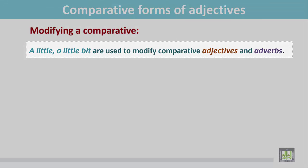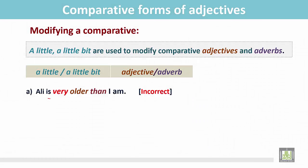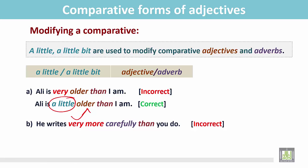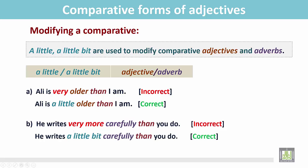A little and a little bit are also used to modify comparative adjectives and adverbs. For example: 'Ali is very older than I' is wrong. The correct answer is: 'Ali is a little older than I am.' Another example: 'He writes very more carefully than you do' is wrong. The correct answer is: 'He writes a little bit more carefully than you do.' We can use a little or a little bit before comparative forms.